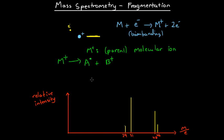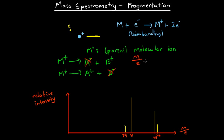We denote that free radical by a dot. This can happen in both ways — the charge can end up with either particle A or particle B. Because mass spectrometry equipment relies on charged particles curving through a magnetic field, the neutral free radicals will not be picked up by the mass spectrometer. Mathematically, if we look at the mass-to-charge ratio, it's undefined because there is no charge — e equals zero. So only the charged ions will be detected and appear on our graph.